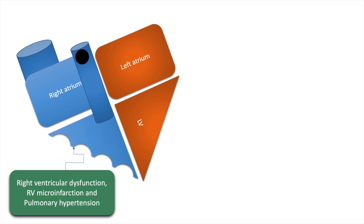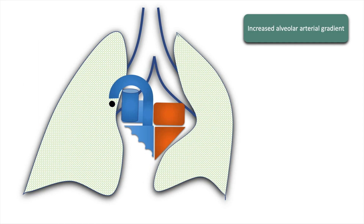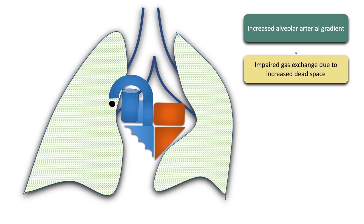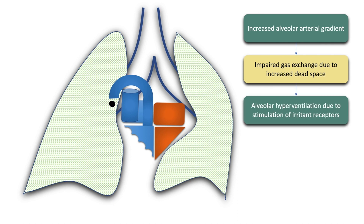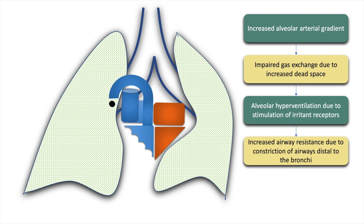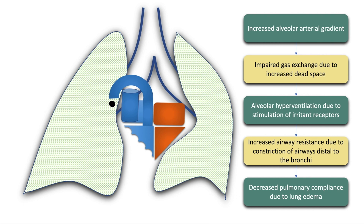It may cause right ventricular dysfunction, right ventricular microinfarction, and pulmonary hypertension, also increased alveolar-arterial gradient, impaired gas exchange due to increased dead space, alveolar hyperventilation due to stimulation of irritant receptors, increased airway resistance due to constriction of airways distal to the bronchi, and decreased pulmonary compliance due to lung edema.